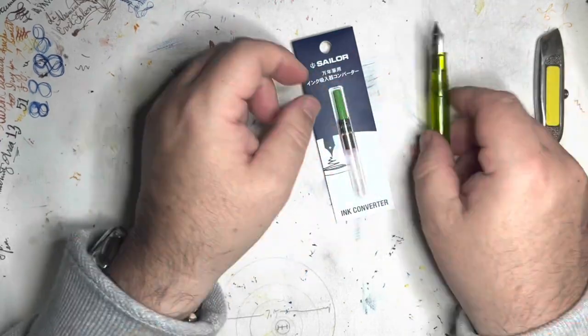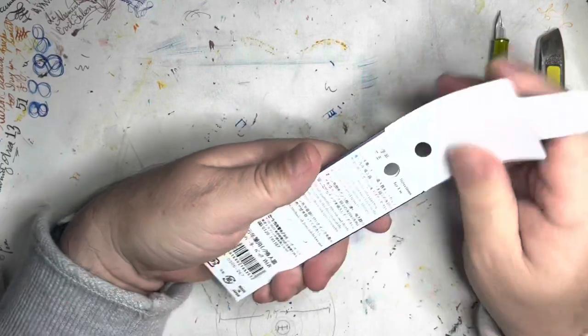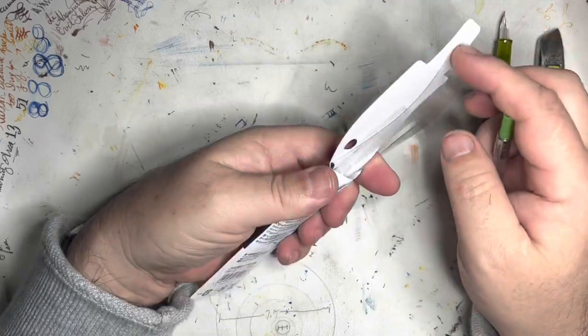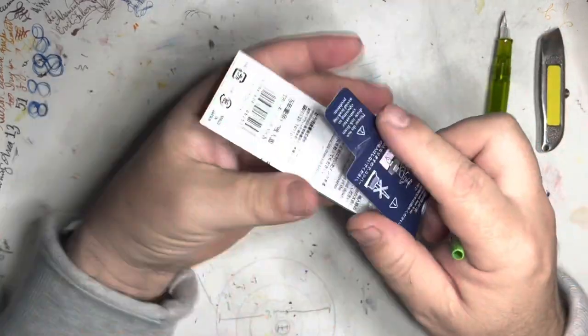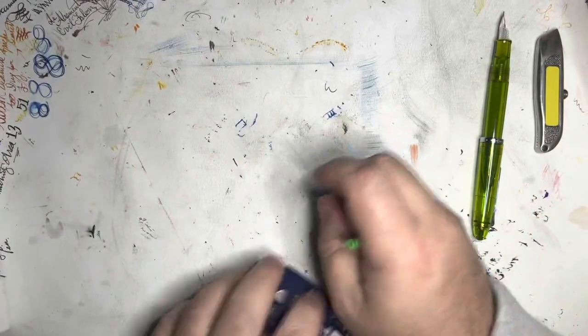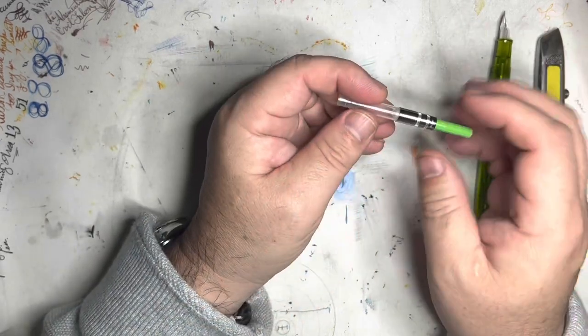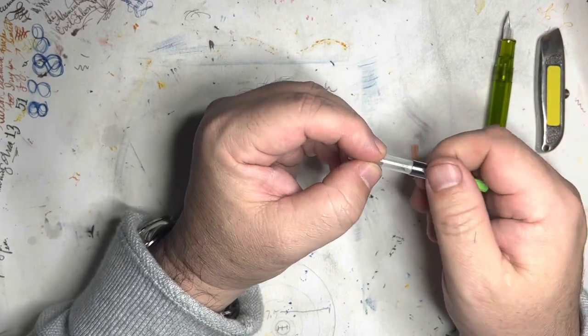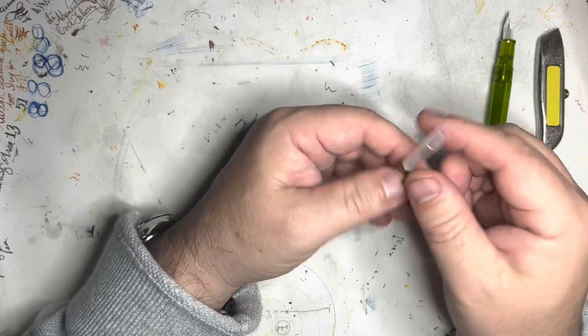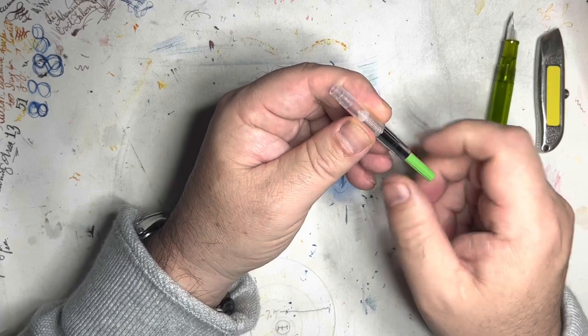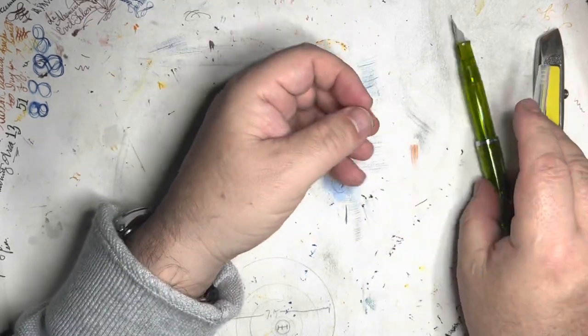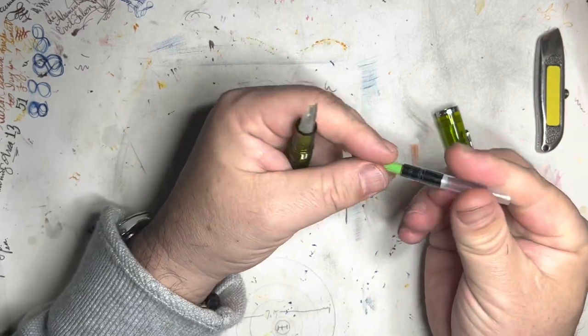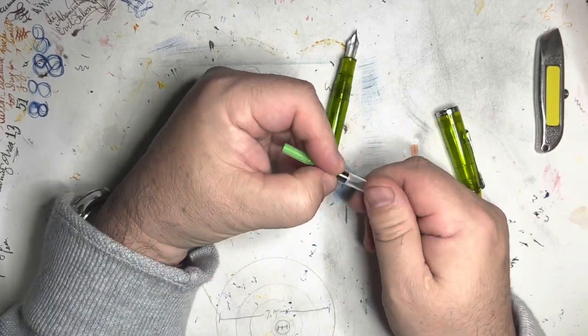So, let's take a look at the converter. Now I took this converter out once before, so it has already been opened and I've greased this converter. When I get these pens new, the first thing I do is disassemble the converter and make sure that everything was in proper working condition. So at that time when I took it apart, I also greased up the converter because sailor converters can be rather difficult to draw ink with sometimes. I use silicone grease and you want to keep the grease away from the mouth of the converter. So when I take this converter, I'll just take it apart real quick. These converters come apart very easily.